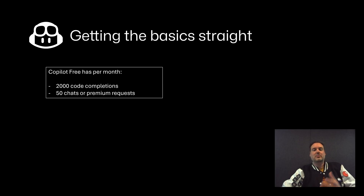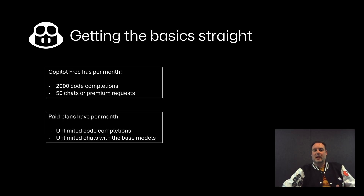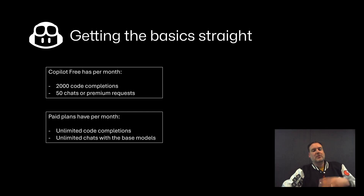We also get 50 chat messages or premium requests available in the Free plan. As soon as you switch to a paid plan, you get unlimited code completions every single month — Copilot can suggest the next line or block of code without limit. You also get unlimited chats with the base model.